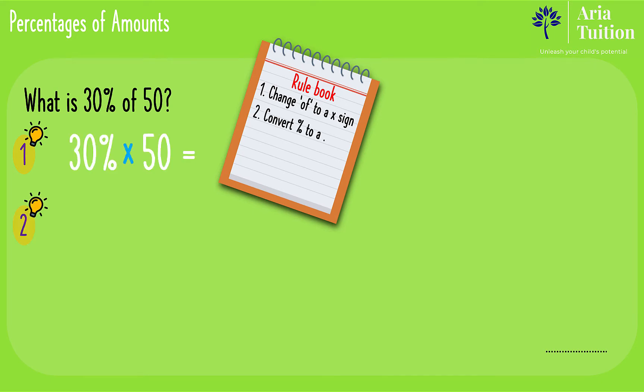Rule number two is to convert the percentage into a decimal number. How do we convert a percentage into a decimal? To go from a percent to a decimal we simply divide by 100, and from a decimal to a percentage we perform the inverse which is multiplying by 100. Make sure that you understand and memorize this diagram for the 11 plus exam.